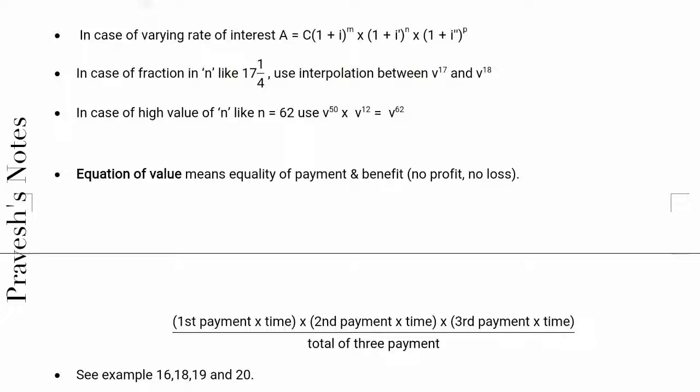Equation of value means equality of payment and benefit (no profit, no loss). (1st payment × time) + (2nd payment × time) + (3rd payment × time) / total of 3 payments.